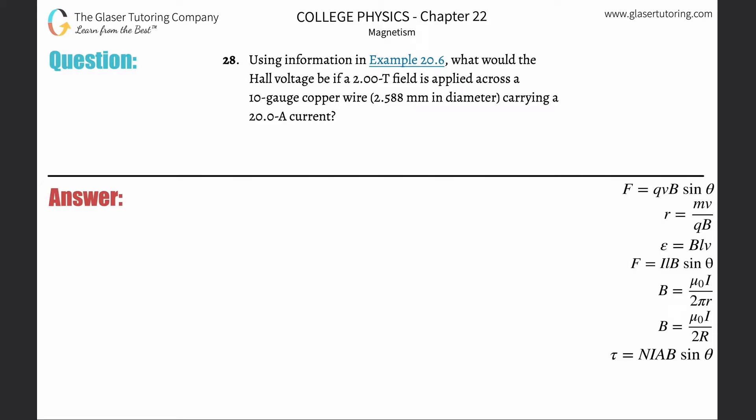Number 28: Using information in Example 20.6, what would be the Hall voltage if a 2 Tesla field is applied across a 10-gauge copper wire which is 2.588 millimeters in diameter carrying a 20 amp current?